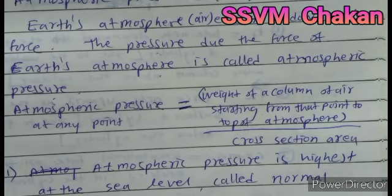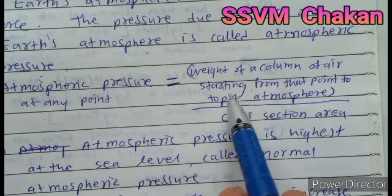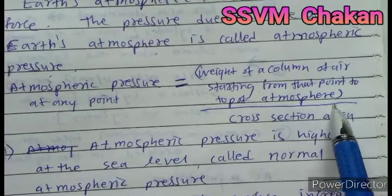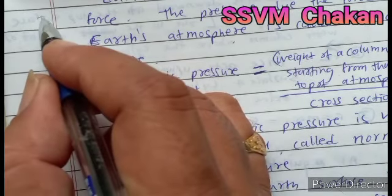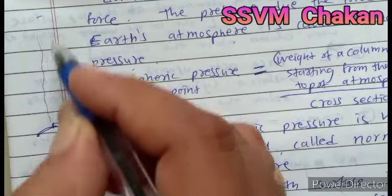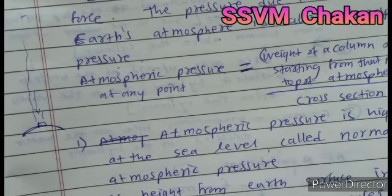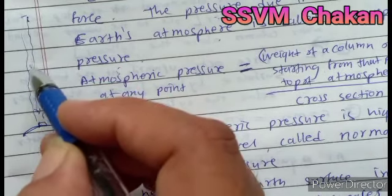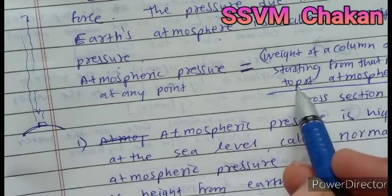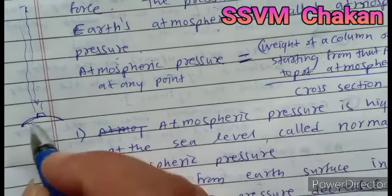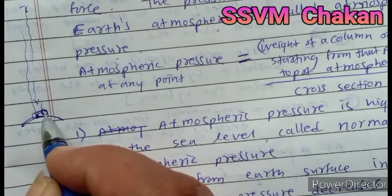P = F/A, so the atmospheric pressure at any point is the weight of the column of air starting from that point to the top of the atmosphere, divided by the cross-sectional area. This gives the force acting on a unit area — that is the pressure.